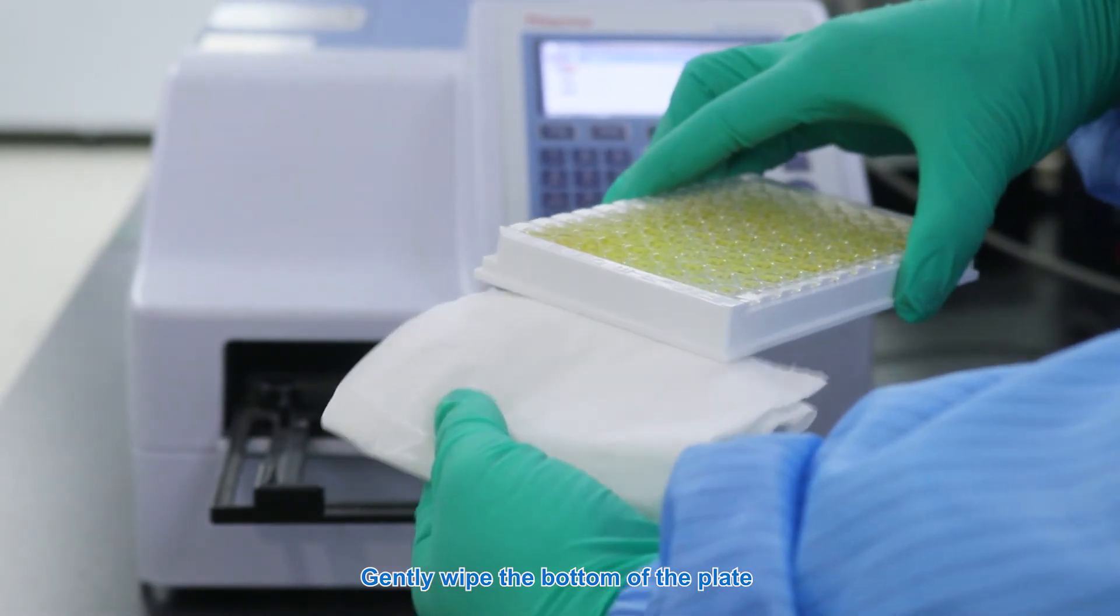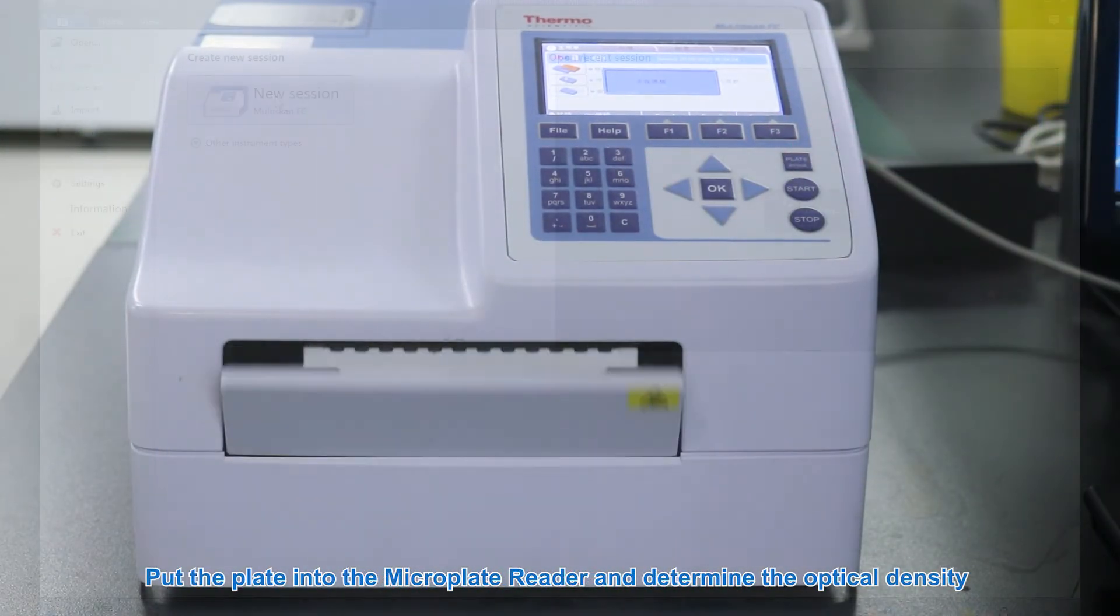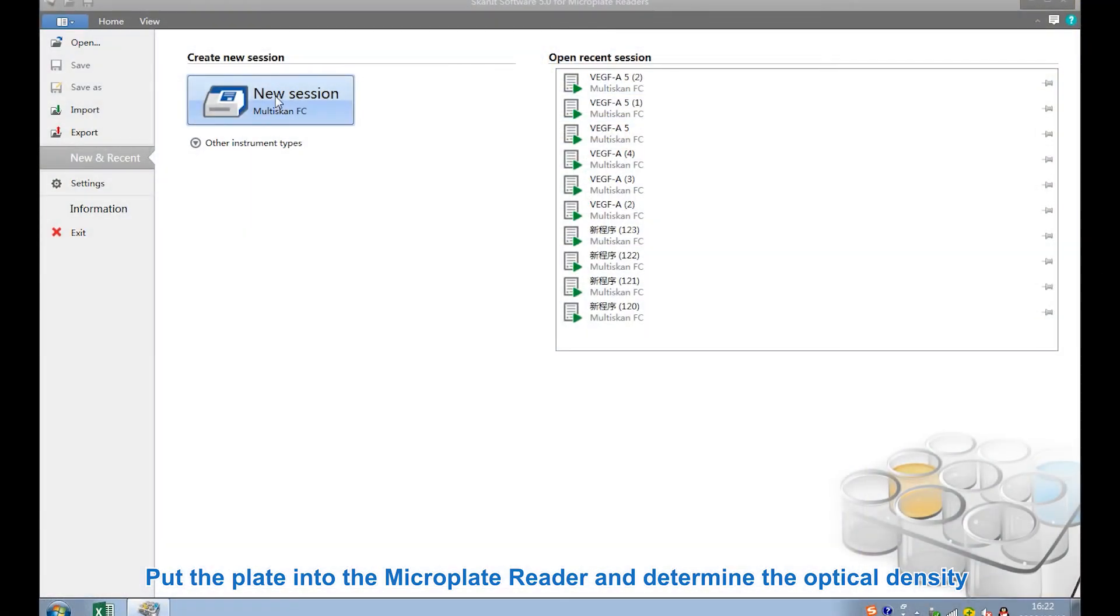Wipe the bottom of the plate. Put the plate into the microplate reader and determine the optical density.